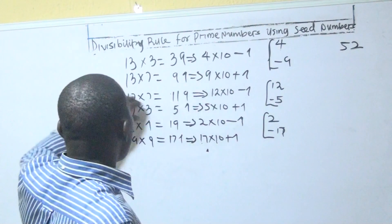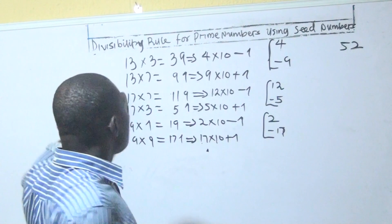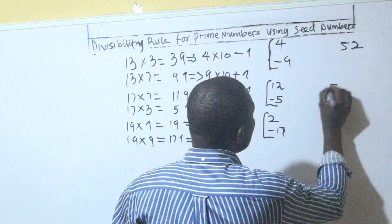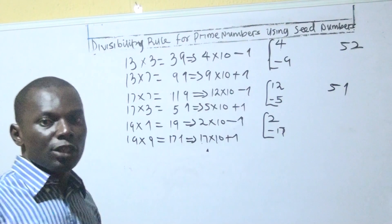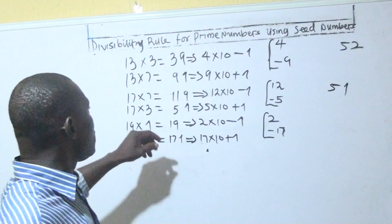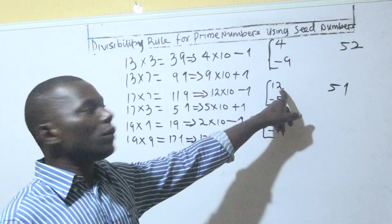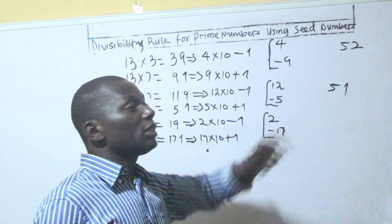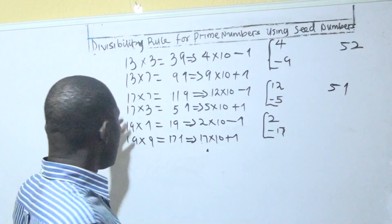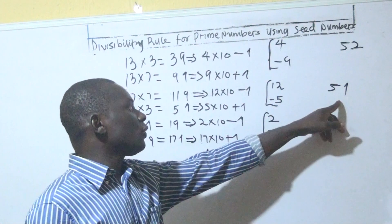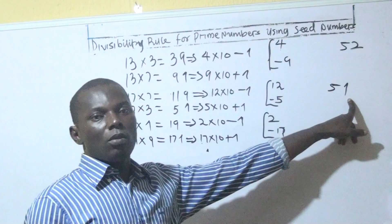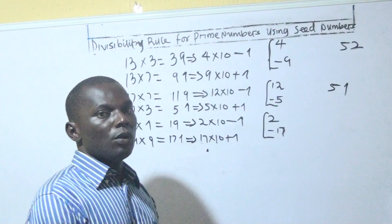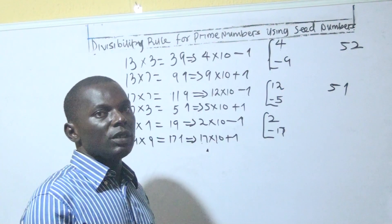Let's look at the next prime number, which is 17. Let's test if 51 is divisible by 17. Using seed +12: 12 times the unit digit 1 is 12; add it to 5, that gives 17. It works. Now let's try seed −5: −5 times 1 is −5; add it to 5 gives 0. This confirms that 51 is divisible by 17.